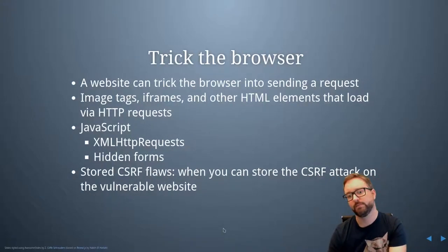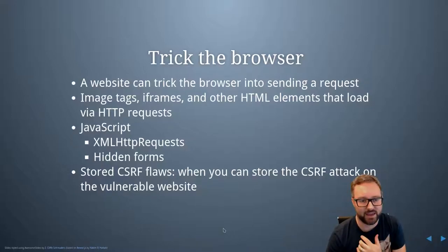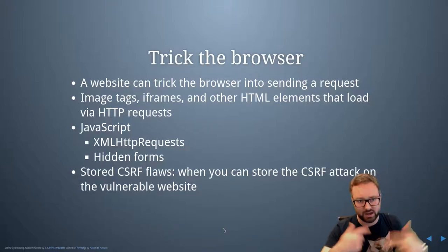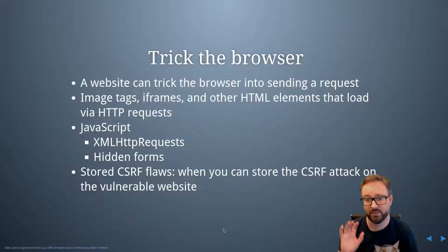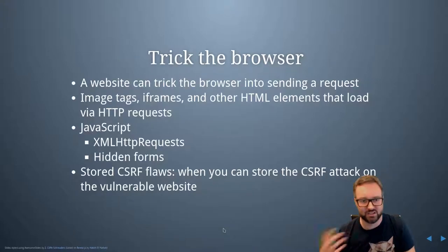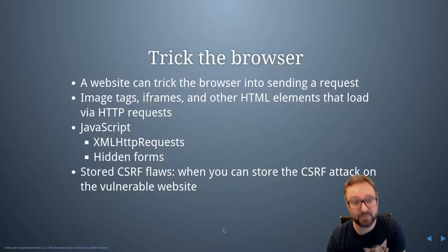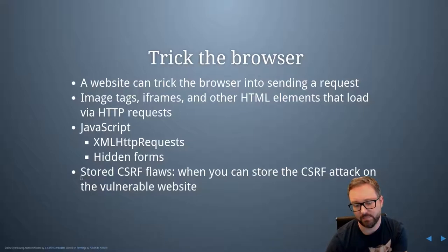You can also trick a web browser by hosting a website that's completely separate from the victim website. If you get them to visit it, inside that website you could have some JavaScript which generates requests, or just image tags, iframes, or other HTML elements that load via an HTTP request. An image tag is a classic example where you could set the source to whatever request you want their web browser to make, and as soon as they visit the website it tries to load all the images and makes all those requests. JavaScript can also make requests by initiating a hidden form or via AJAX like an XMLHttpRequest.